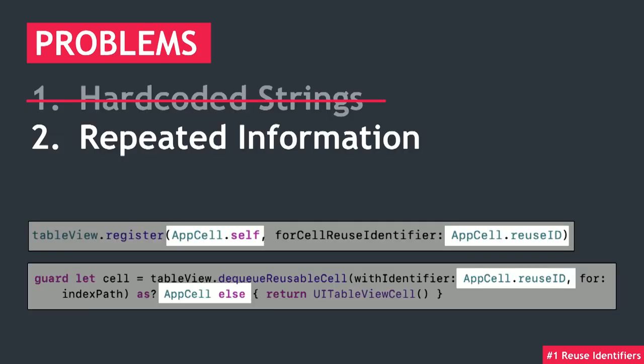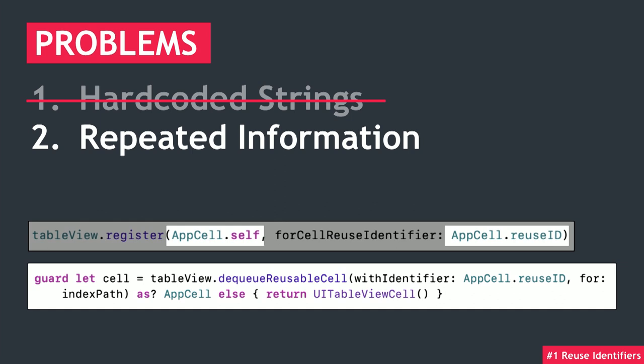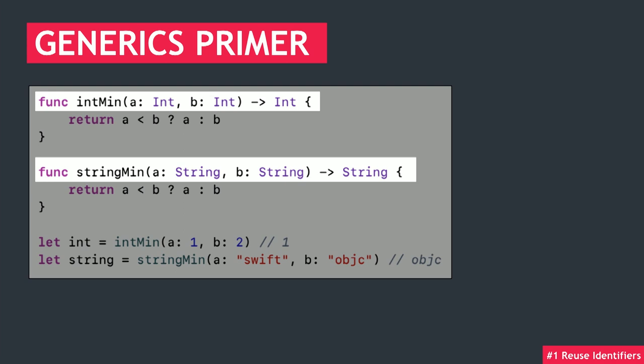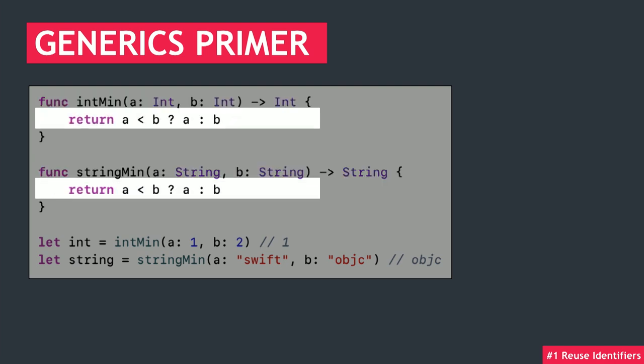On to the second one. We're using the app cell class twice in our register and dequeue methods, and that whole guard-let unwrapping looks like a mess. To improve that, we'll use a feature of the Swift language called generics. Generic programming is a way for you to write code that completely abstracts the data type. So let's say you have to write a function that gets the minimum of two inputs and it has to work for integers and strings. We could write an intMin that takes two integers and returns the smaller one, and a stringMin that does the same for strings. The function signatures are different only in the data type they accept and return, and the bodies are completely identical. With generics, we can reduce these two functions into one and remove the redundant code.